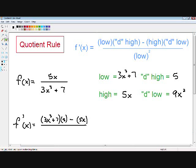All over the square of what's below. So that's just 3x cubed plus 7 squared.